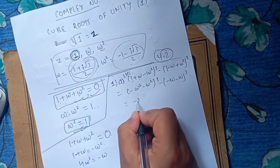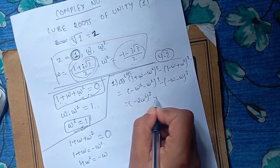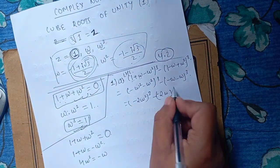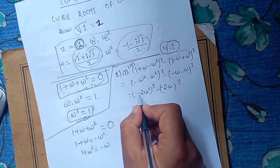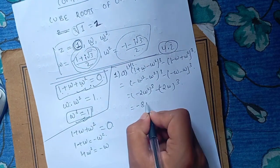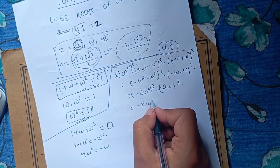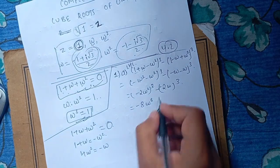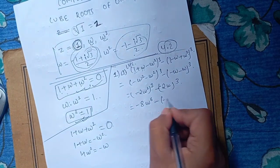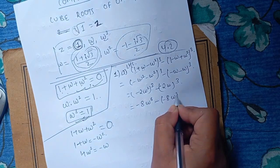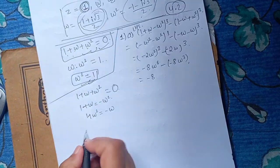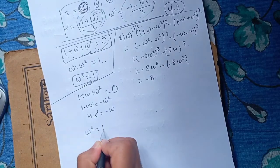2 omega square cubed, minus 1 minus, and minus 2 omega square. Minus omega squared into omega cubed is omega to the power 6. Minus 8 omega cubed, minus 8 omega to the power 6.